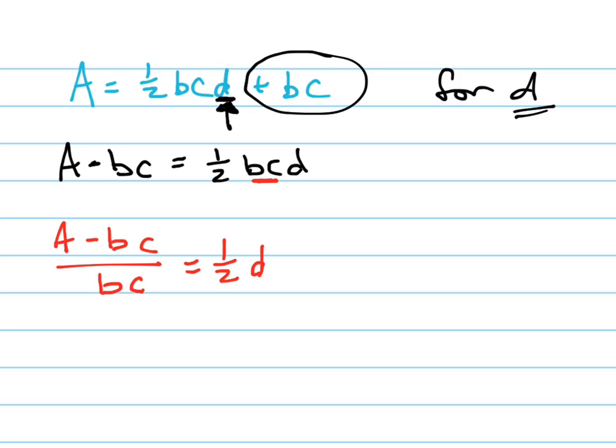I could have also divided by one-half at the same time, but I'm doing it like this so that it's a little bit easier to see. And now how do I get rid of the one-half?